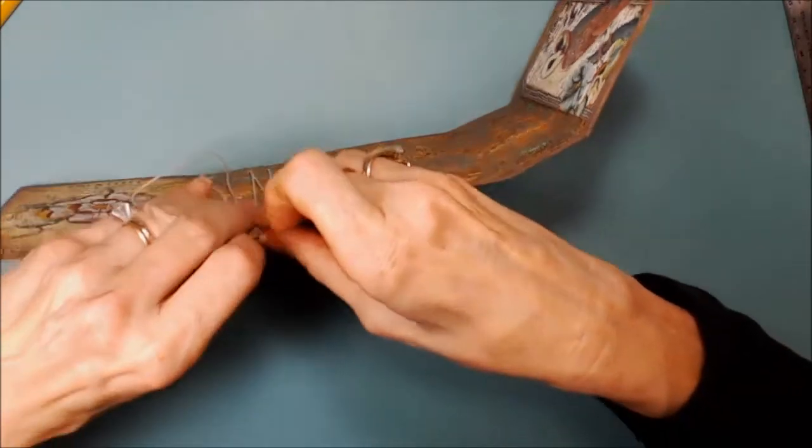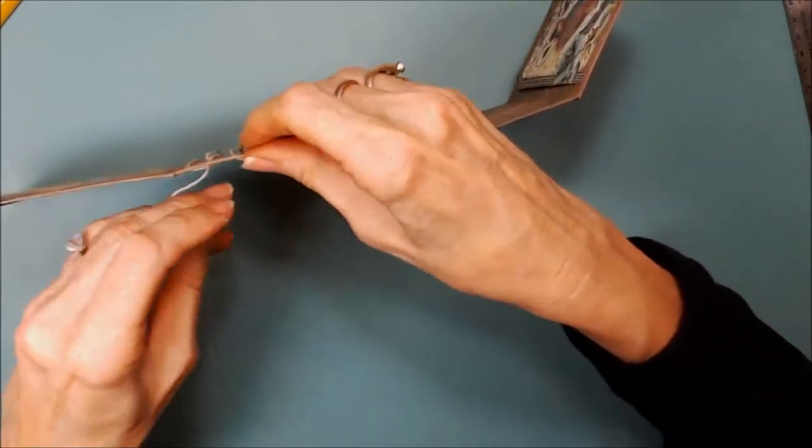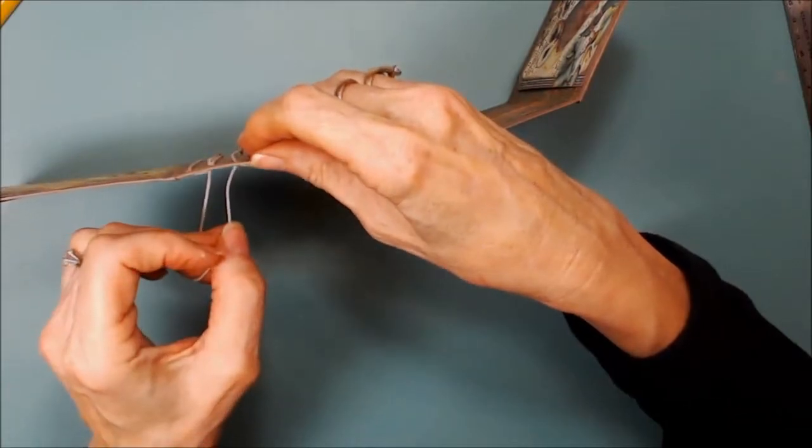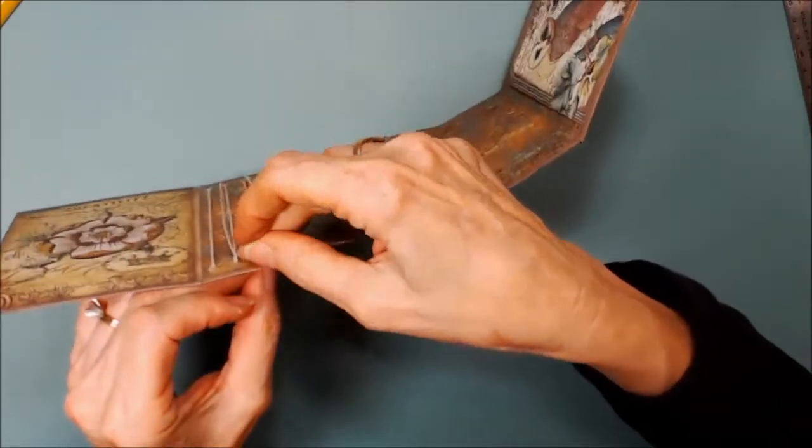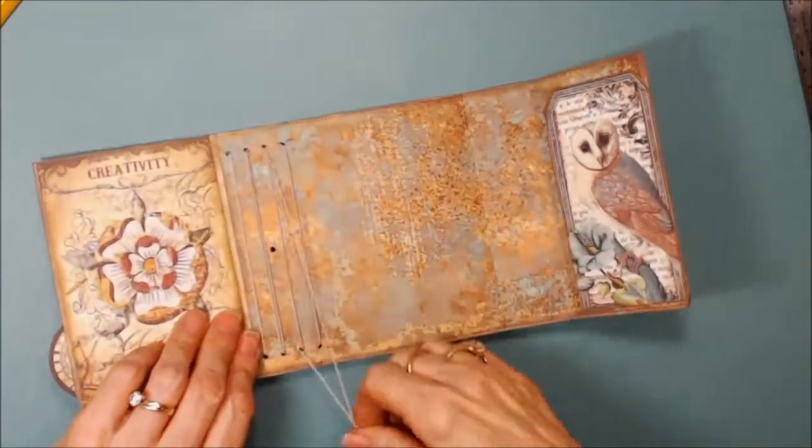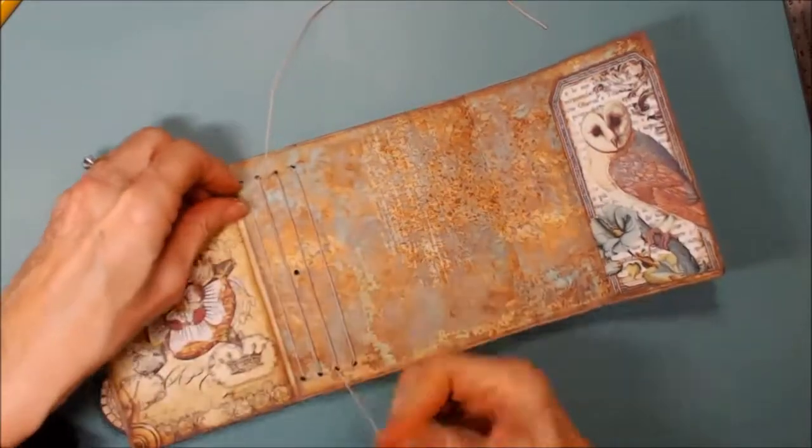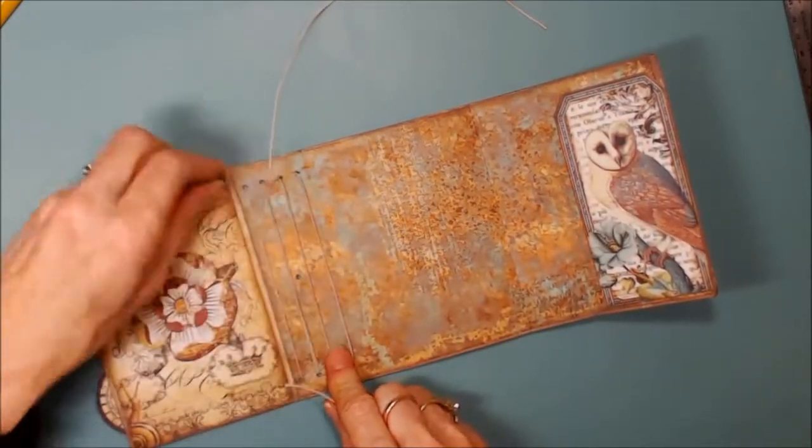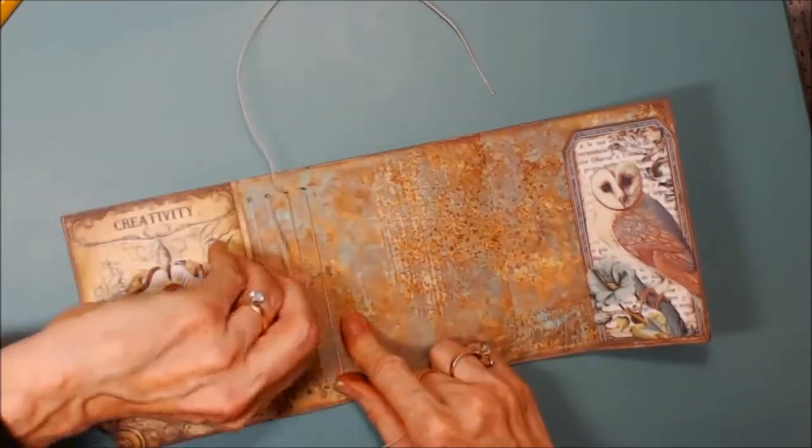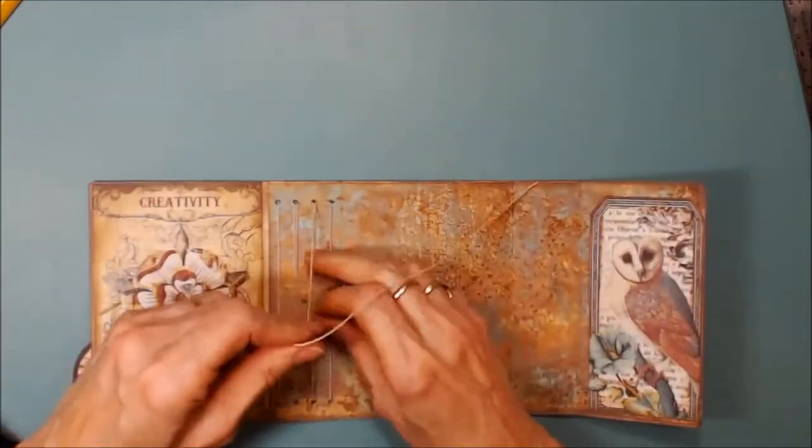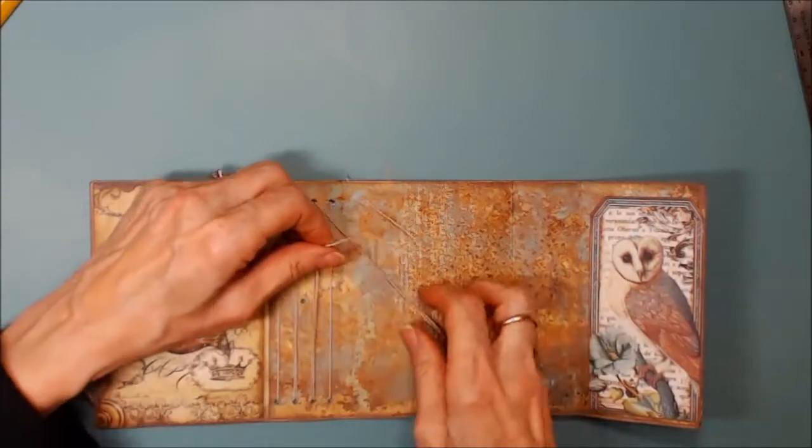As you can see, I'm fumbly fingers here. Then thread it through the third hole from the left. Now your two pieces of elastic should line up, and you can tie it off by tying a square knot. I always use a square knot because you can untie that.